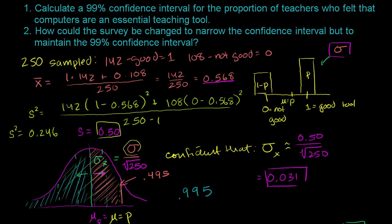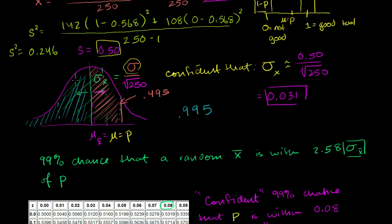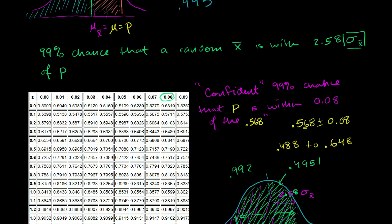That answers the first part of the question. The second part asks: how could the survey be changed to narrow the confidence interval but maintain the 99% confidence level? You could just take more samples. If you take more samples, then our estimate of the standard deviation of the sampling distribution will go down because the denominator will be higher. If the standard deviation goes down, then when we do the plus or minus on the range, this value will go down and will narrow our range.